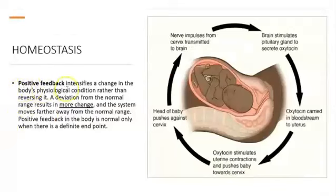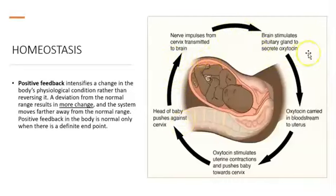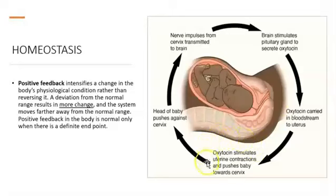An example of positive feedback is when a female is going to deliver a baby. When delivery begins, uterine contractions start, but instead of reducing the contractions, they become more frequent and stronger until the baby is born. In this case, the body doesn't do the opposite — it increases and provides more uterine contractions more frequently. Because of that, this is considered positive feedback.